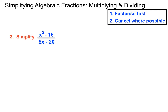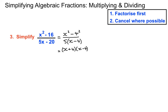Here, x squared minus 16 can be factorised using the difference of two squares — have a look at a previous video on that if you haven't already. We're going to rewrite that as one term squared minus another term squared, which allows us to factorise using a shortcut. We'll also factorise the bottom: 5 can go into 5x, and what we've got to multiply 5 by to get minus 20 is minus 4.